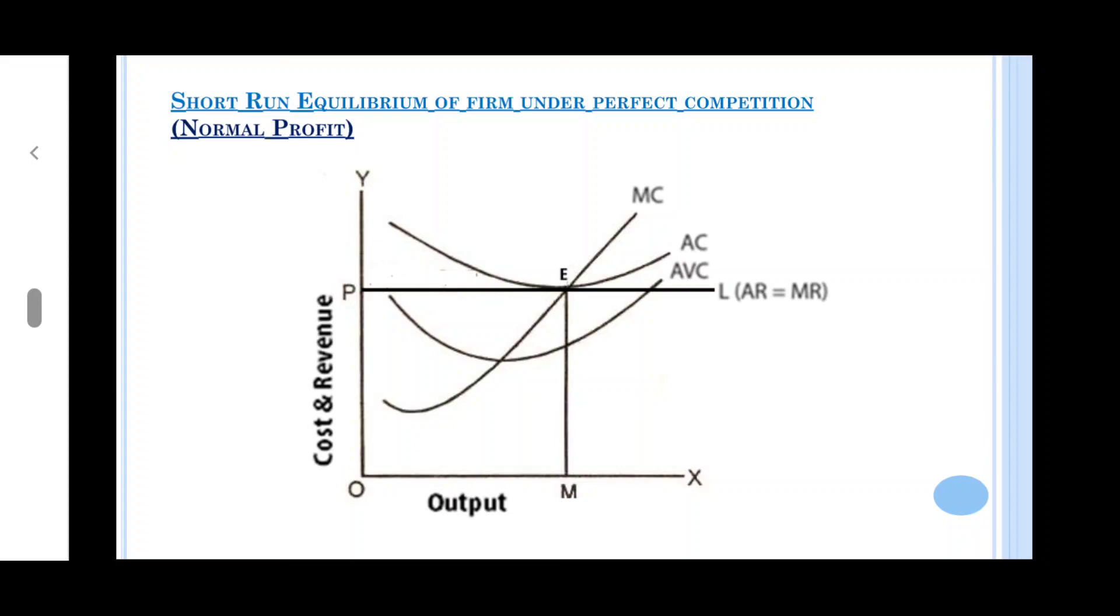All three conditions are fulfilled at point E. So point E is the equilibrium point. Here marginal cost is equal to marginal revenue. Marginal cost curve is cutting MR from below and after cutting it is rising. And look carefully that AR is greater than AVC. If you carefully study this figure, you will observe that AR at ME is equal to average cost.